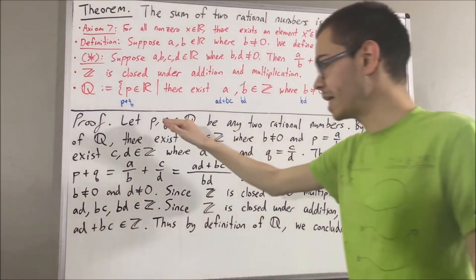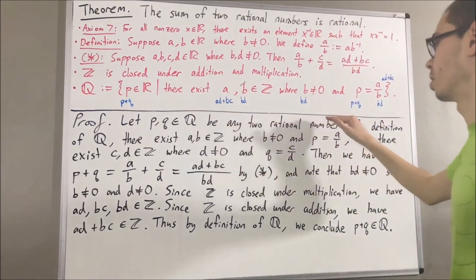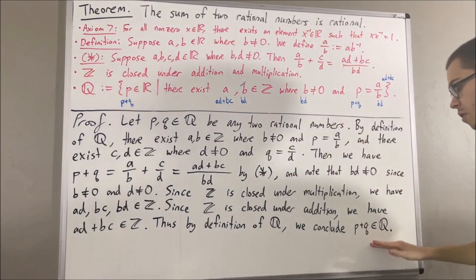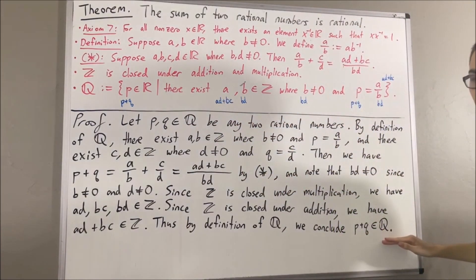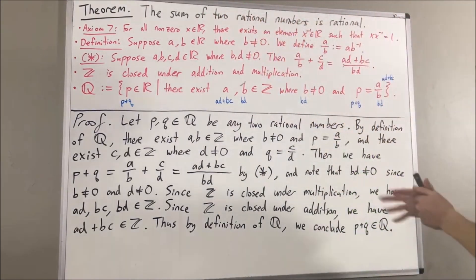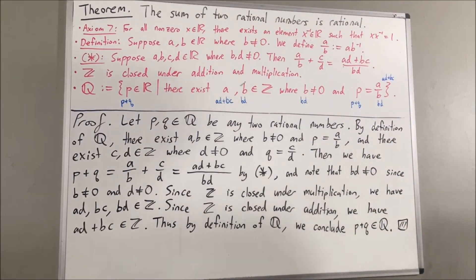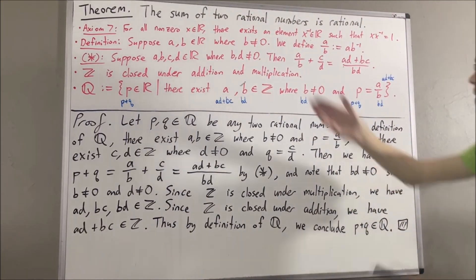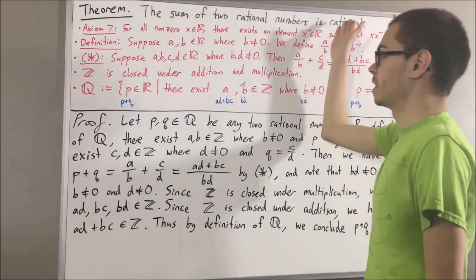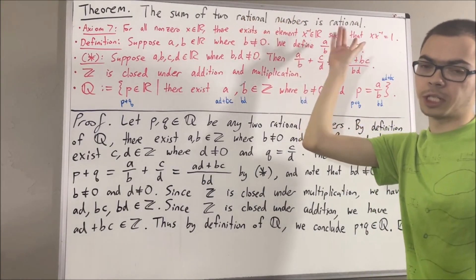We have shown that if p and q are any two rational numbers, then p plus q is a rational number. So we've shown that the sum of any two rational numbers is a rational number, and this completes the proof. Another way of saying this is that the set of rational numbers is closed under addition.